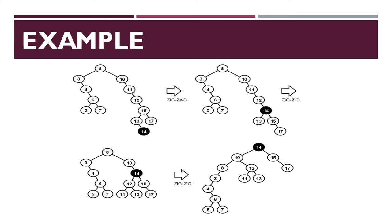First, perform zig operation. Then the nodes will be 15, 14 and 13. After performing zag rotation, the elements will be 14, 13 and 15 — just move node 15 to the right side. So zig-zag operation is completed.